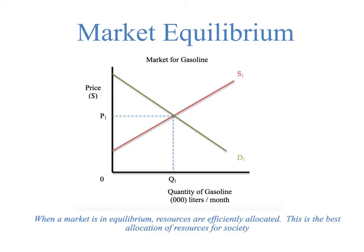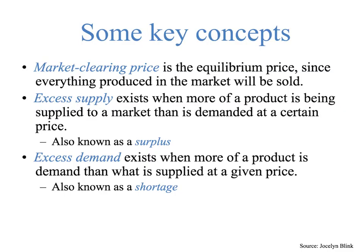So this is the optimal place. And the equilibrium is a situation that's self-righting, which is to say that if you try to move away from it without an outside disturbance, it will return to the original position. Now let's look at some key terms. Market clearing price is the equilibrium price — P1 in the case of the graph we were just looking at — because everything produced in the market will be sold. Excess supply exists when more of a product is being supplied to a market than is demanded at a certain price, and this is also known as a surplus.